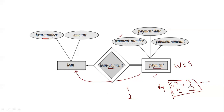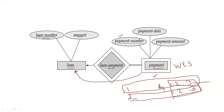Payment numbers one, two, three alone are duplicates and cannot be a primary key. But when we attach the loan number, the payment number becomes unique. Payments one, two, three belong to loan number one; payments one, two, three belong to loan number two — so in combination, each payment is unique for a particular loan number. Along with the weak entity set, one strong entity set is required for this diagram to be complete.